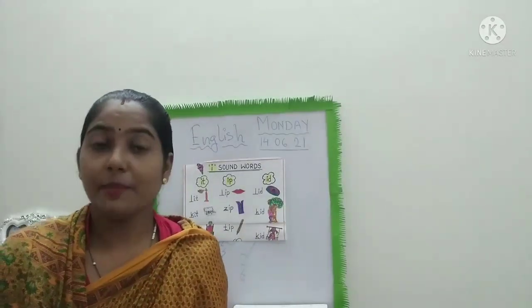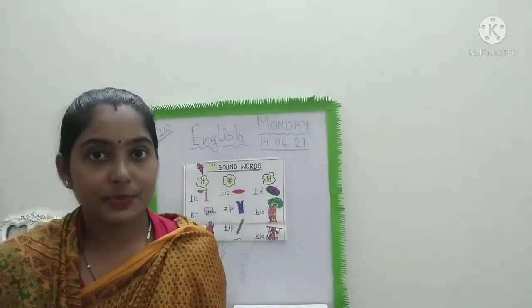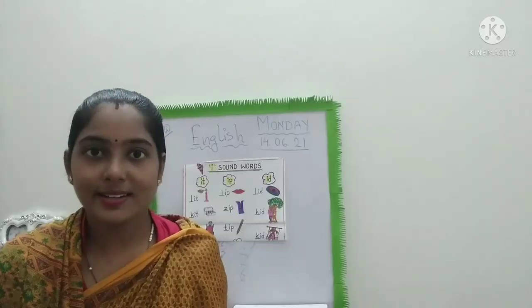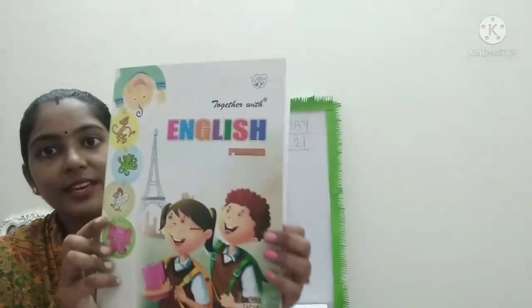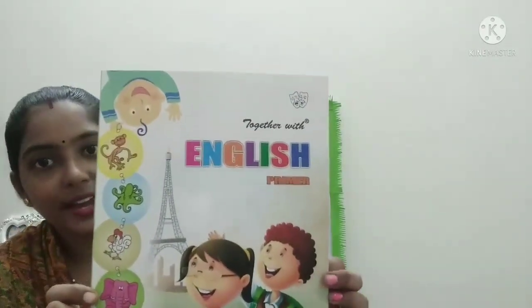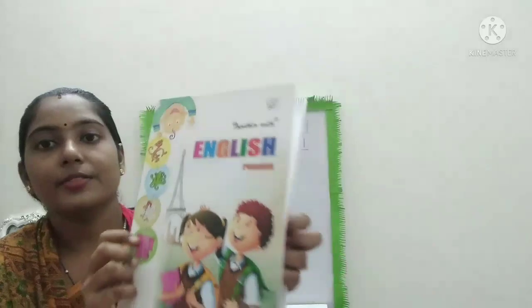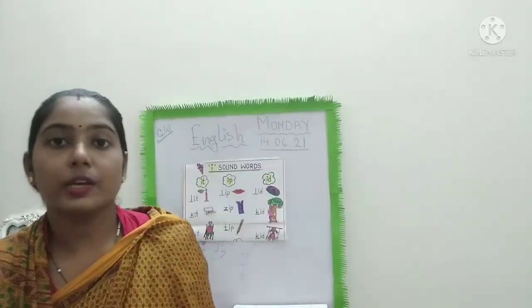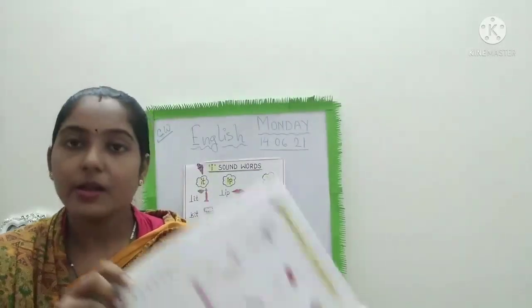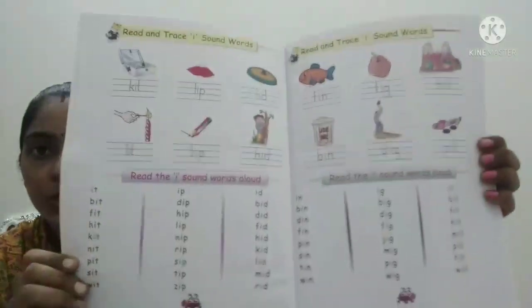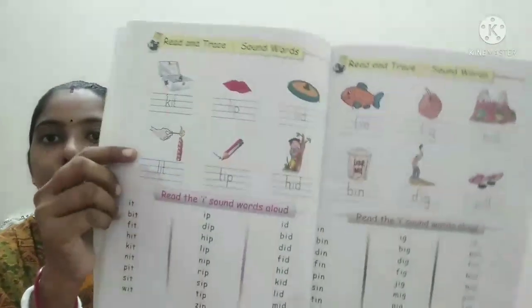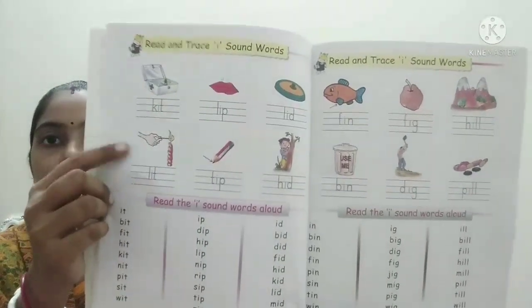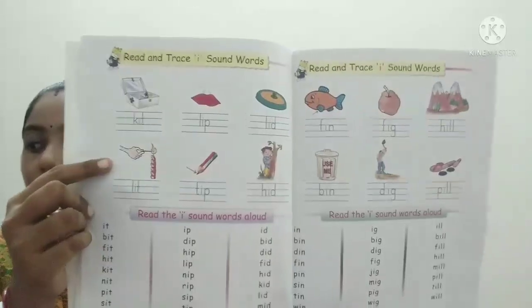So children, tell me the name of our English book. Can you remember? Together with English Primer — right? Now in this book, you will open page number 22. What are the words we have learned today? Here in this page you can see, right?